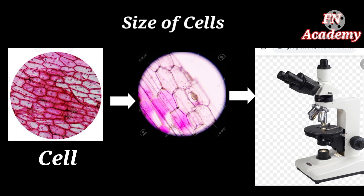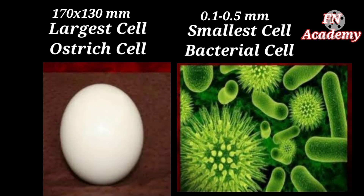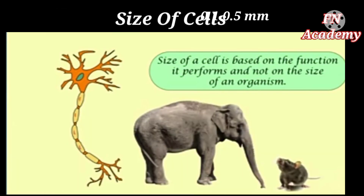Coming to the size of cells — cells are very tiny and are not visible to the naked eye. To view them, we use a microscope, an instrument that magnifies and enlarges the image of a cell. The smallest cell is 0.1 to 0.5 micrometers, which is a bacterial cell, while the largest cell is 170 mm to 130 mm, which is the egg of an ostrich. The size of a cell is based on the functions it performs, not on the size of the organism — so a nerve cell will be the same size in an elephant and in a rat.